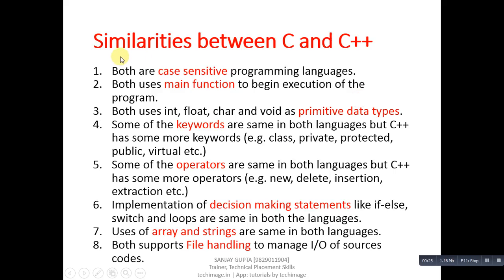First, similarities between C and C++. As you can see, a total of eight points are listed here. The first one is: both are case-sensitive programming languages. It means uppercase and lowercase letters are treated differently, just as passwords for login IDs are case-sensitive. The second point is: both use the main function to begin execution of the program.